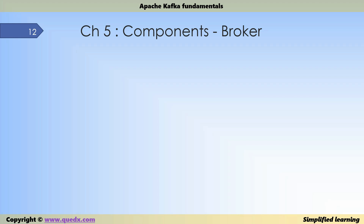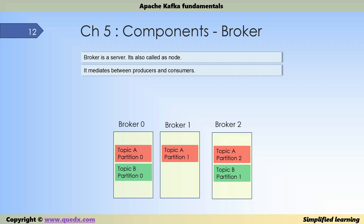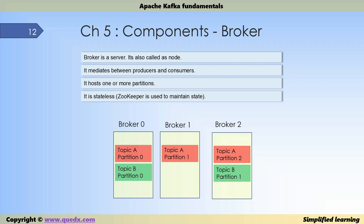Let's understand what a broker is. Here we have topic A divided into three partitions (0, 1, 2) and topic B with two partitions (0, 1). Each partition must reside on a certain server — each yellow box in the diagram denotes one server, called a broker. A broker is a server, also called a node, that mediates between producers and consumers. It hosts one or more partitions. For example, broker 0 hosts partition 0 of topic A and partition 0 of topic B, broker 1 hosts partition 1 of topic A, and broker 2 hosts partition 2 of topic A and partition 1 of topic B. The broker is stateless, and ZooKeeper is used to maintain state in Kafka.